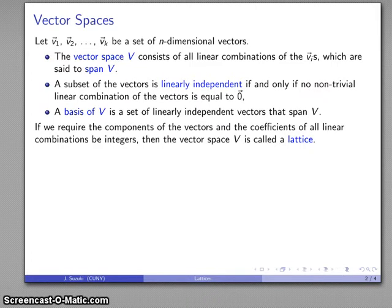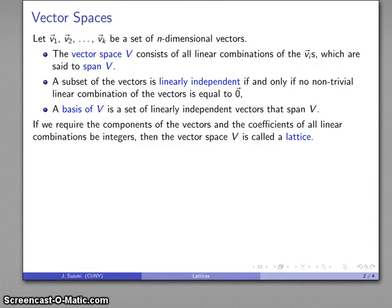Now if I require that the components of the vectors and the coefficients of all linear combinations be integers, then the vector space V that I obtain is called a lattice. Part of the reason it's called a lattice is that if we take the viewpoint that any linear combination of these vectors corresponds to some point in our vector space, then the set of points we're talking about, if everything is an integer, consists of a set of discrete points.